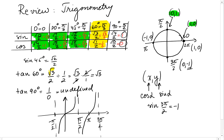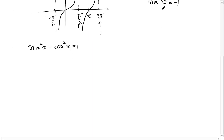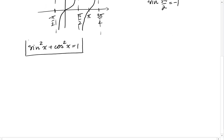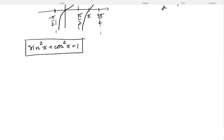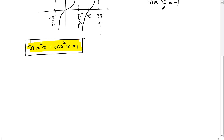0 squared plus 1 squared is 1, and negative 1 squared plus 0 squared is 1. So this is a very important formula — I'll put it in a box. I'm going to use this formula to figure out two more formulas from here.